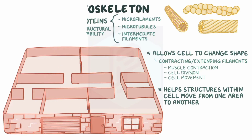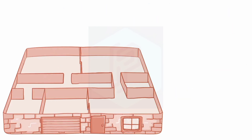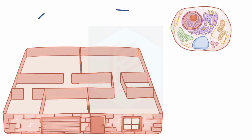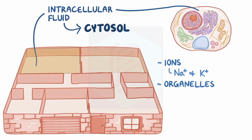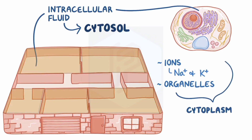Now that the apartment is built, let's fill it in. The cell is filled with intracellular fluid called cytosol, which contains various ions like sodium and potassium. In addition, cells have a number of organelles, which are like little rooms within our apartment. And together, the cytosol and the organelles make up the cytoplasm of the cell.